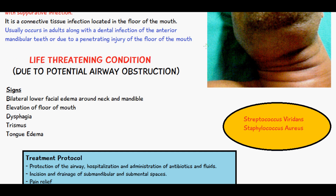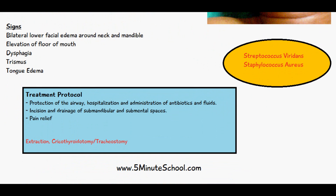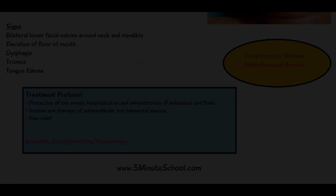Further along, if it is due to mandibular central or lateral incisors causing the infection, they can be extracted. Another thing that can be done to prevent airway obstruction is cricothyroidotomy or a tracheostomy, which is done in emergency cases to deal with respiratory obstruction. In the case of tracheostomy, it has to be done lower down to avoid the infected area.